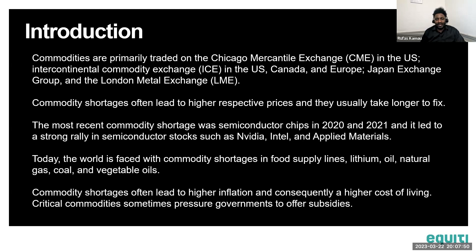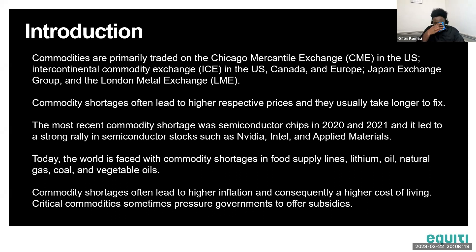Commodity shortages often lead to higher inflation. In Kenya, when there was a shortage of oil, prices went higher and there was a ripple effect where other products dependent on oil also rose, pushing up the cost of living. Critical commodities sometimes pressure governments to offer subsidies — we saw this in Kenya, and similar things are happening in other countries.